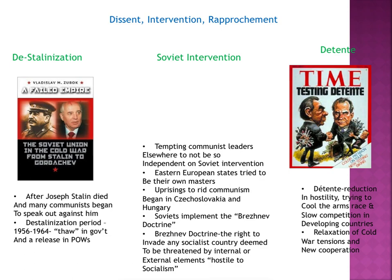Then we see détente — essentially a reduction in hostility. It's a trying to cool the arms race, slow competition in developing countries, and a relaxation of Cold War tensions with new cooperation. Towards the end of the Cold War there's a détente — the idea that we can't keep doing this, we can't keep having these arms races and this total tension with each other all the time because it's very much affecting the world and the societies at the forefront of it.